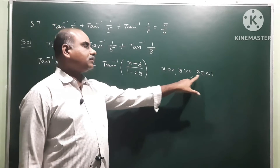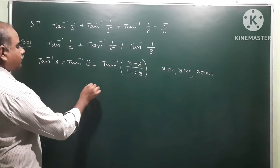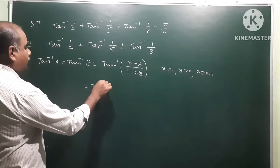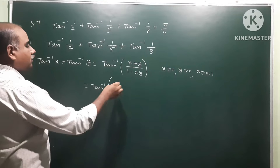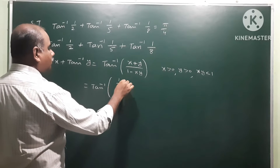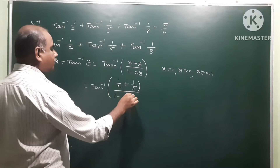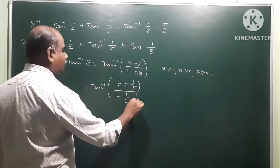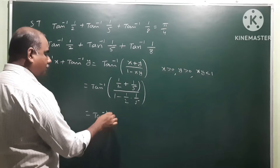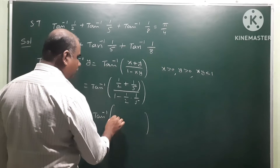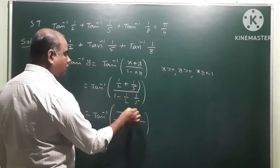Since the conditions are satisfied, we apply the formula. Here x means 1/2 and y means 1/5 for the first two terms. So we get tan inverse of (1/2 plus 1/5) divided by (1 minus 1/2 times 1/5). Taking LCM in numerator and denominator, LCM is 10.